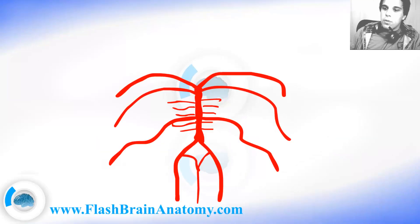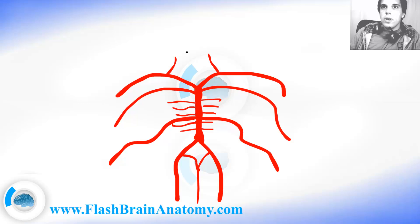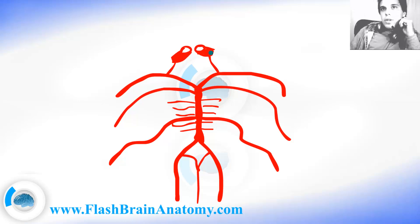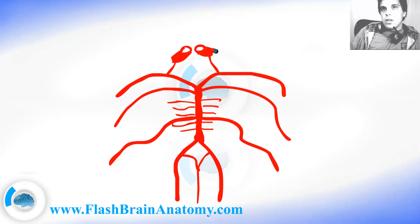Then we have a smaller communicating artery here, and it connects this posterior cerebral artery with the internal carotid artery. There are two internal carotid arteries here.